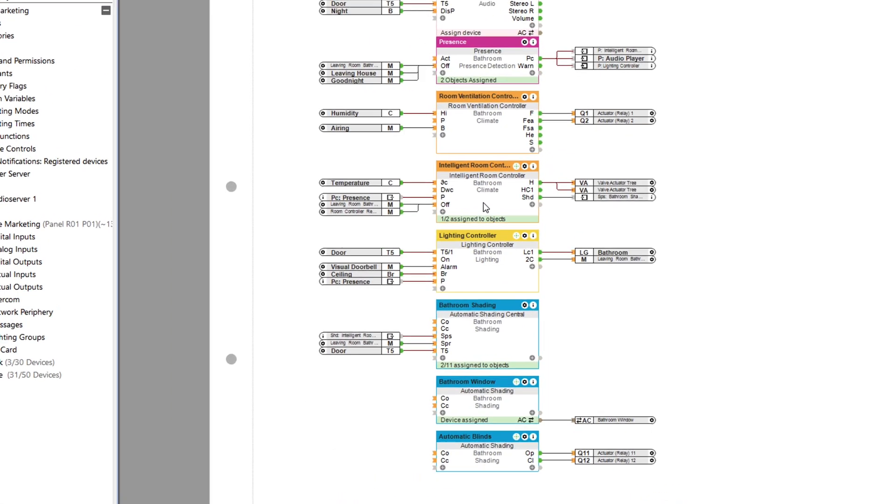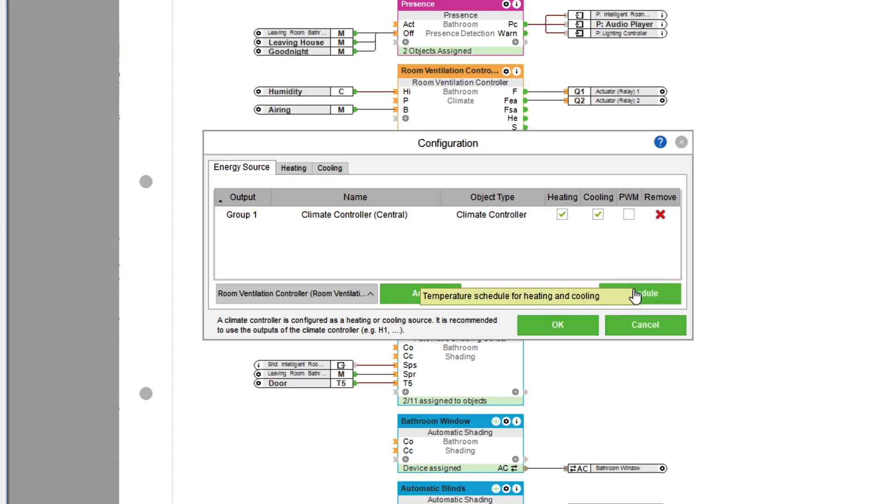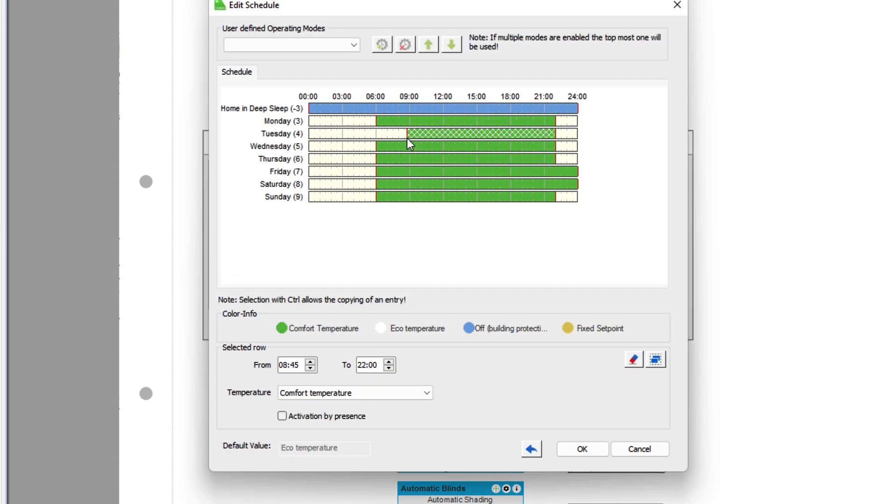Or you could define at certain times, in addition to the comfort temperature of, let's say, 70 degrees Fahrenheit, which is about 21 degrees Celsius, that the bathroom is heated to 72 degrees or 22 degrees Celsius, for example. Of course, this can also be done conveniently via the Loxone app.